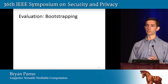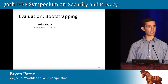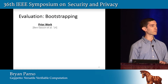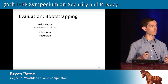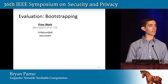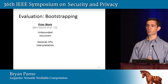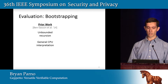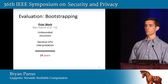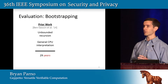In a paper last year at Crypto, Ben-Sasson et al. developed a very nice set of elliptic curve technology that allowed them to do unbounded recursion — proofs about proofs about proofs, ad infinitum. They also used this for a general CPU interpreter, supporting a very general class of computations. Unfortunately this led to fairly slow performance: a standard benchmark application can take upwards of 29 years to run on this framework.